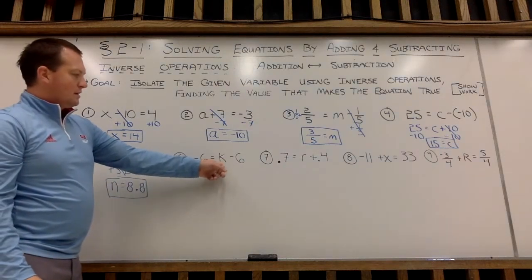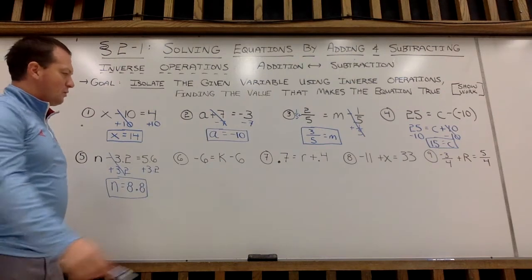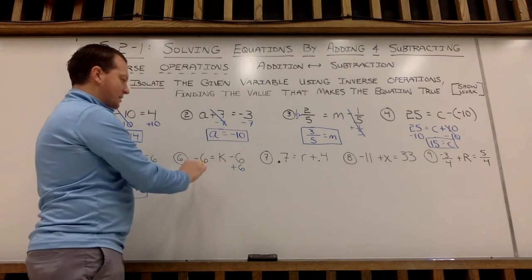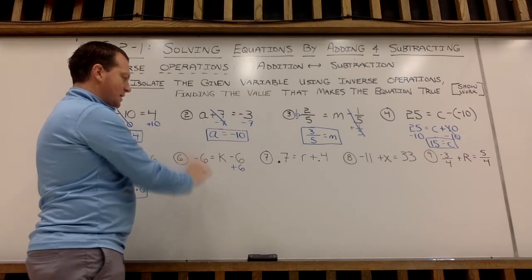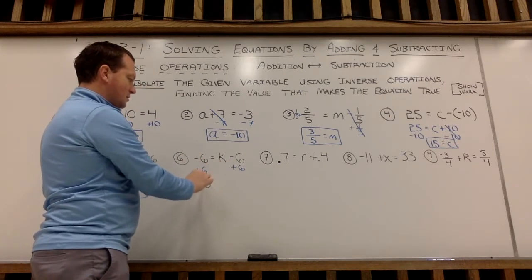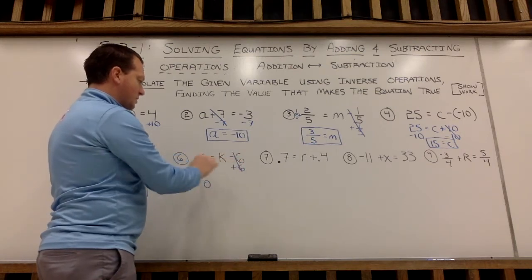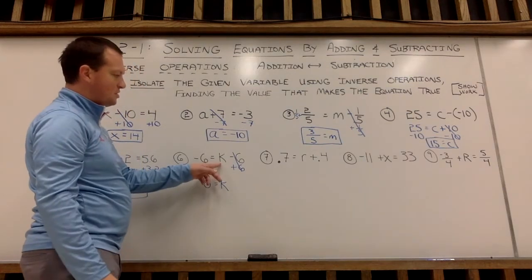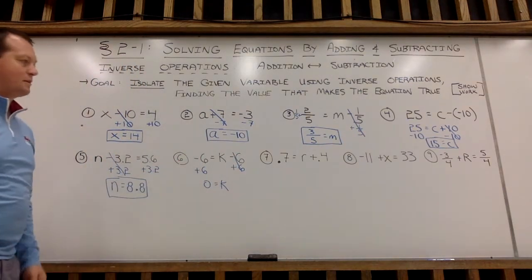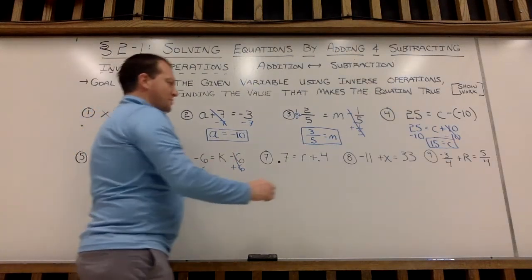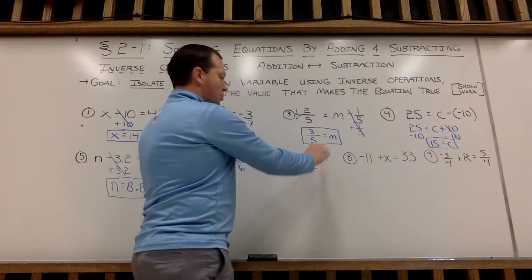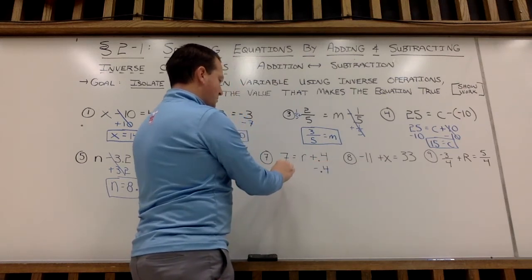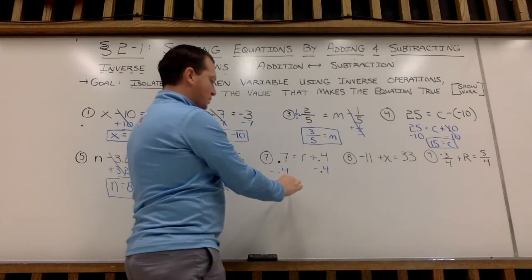Careful on example 6. k is over on the right side — doesn't matter which side your variable is on, you can isolate it on either side. So I'll undo subtracting 6 by adding 6 to both sides. Negative 6 plus 6 is zero, so zero will equal k. Zero minus 6 is negative 6. Example 7, another decimal: we'll undo adding 0.4 with subtracting 0.4 from both sides. 0.7 minus 0.4 is 0.3.